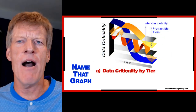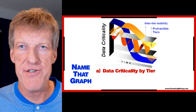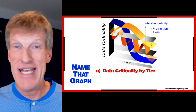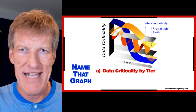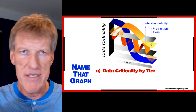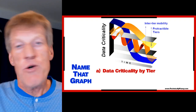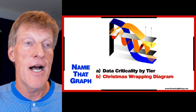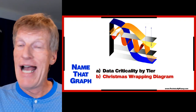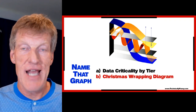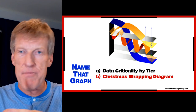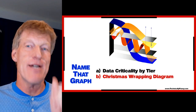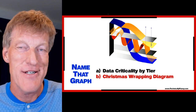Process people always have the best charts and graphs. This one is data criticality versus tier — some kind of data center chart with mobility and different tiers. Cool chart. But what else could it be? It could be a Christmas wrapping diagram. I can never wrap presents — I would need some kind of diagram. Something that maybe comes from Ikea. This actually looks like an Ikea diagram. Or what else could this graph be?